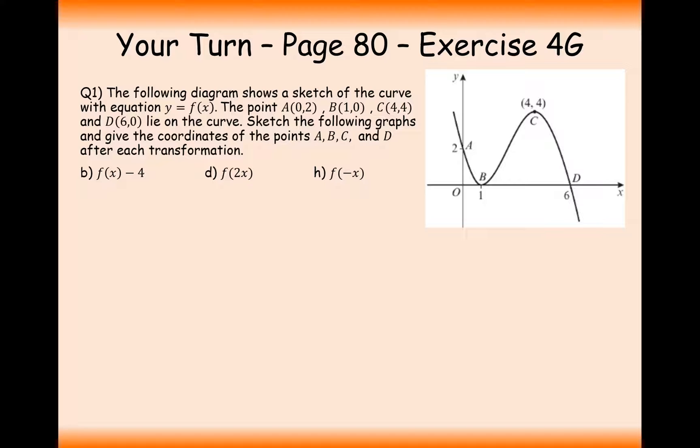Well done for having a go at this question. So part b of this question 1 here is to look at the graph transformation of f of x minus 4. Now in this case here, outside the brackets means a vertical transformation. It's a minus 4, so we're just going to translate it down by 4.